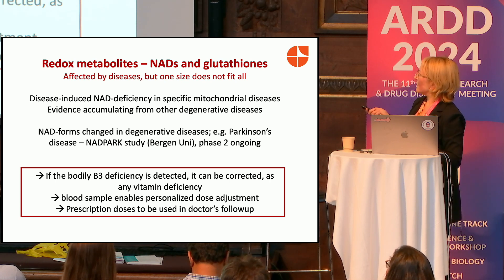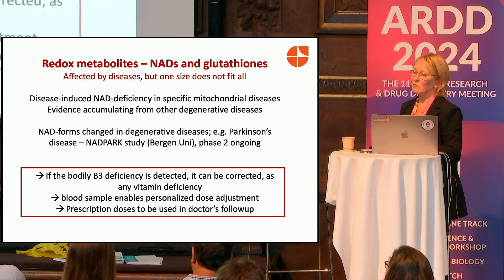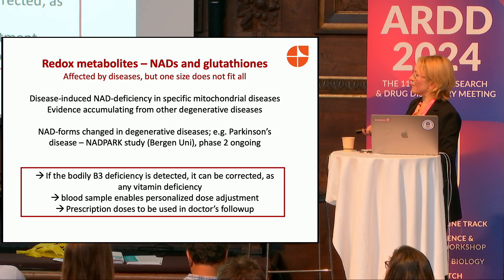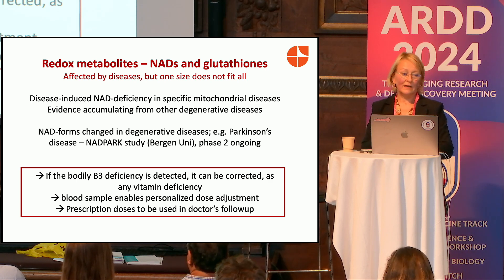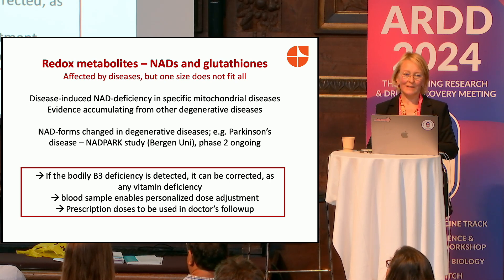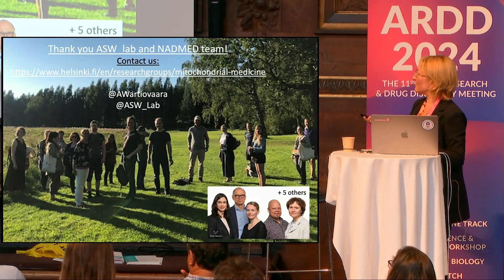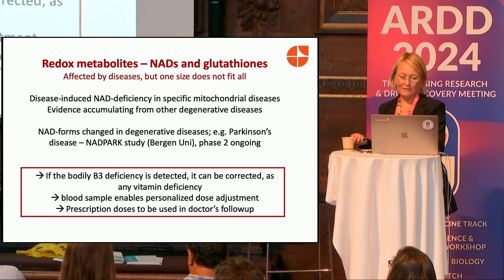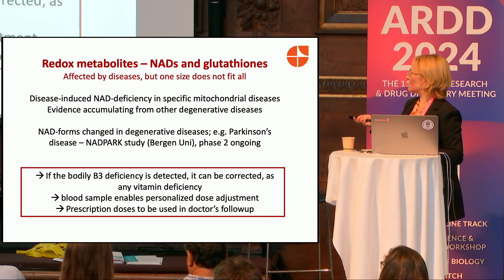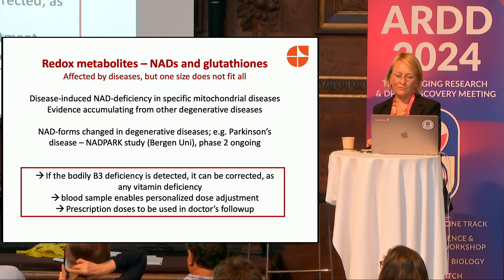There is clear evidence for mitochondrial disorders, and accumulating evidence from human studies in degenerative disorders — quite interestingly for Parkinson's disease. To summarize: if the bodily vitamin B3 is detected as low, it can be corrected as with any vitamin deficiency. Large prescription doses should be used with a doctor's follow-up.